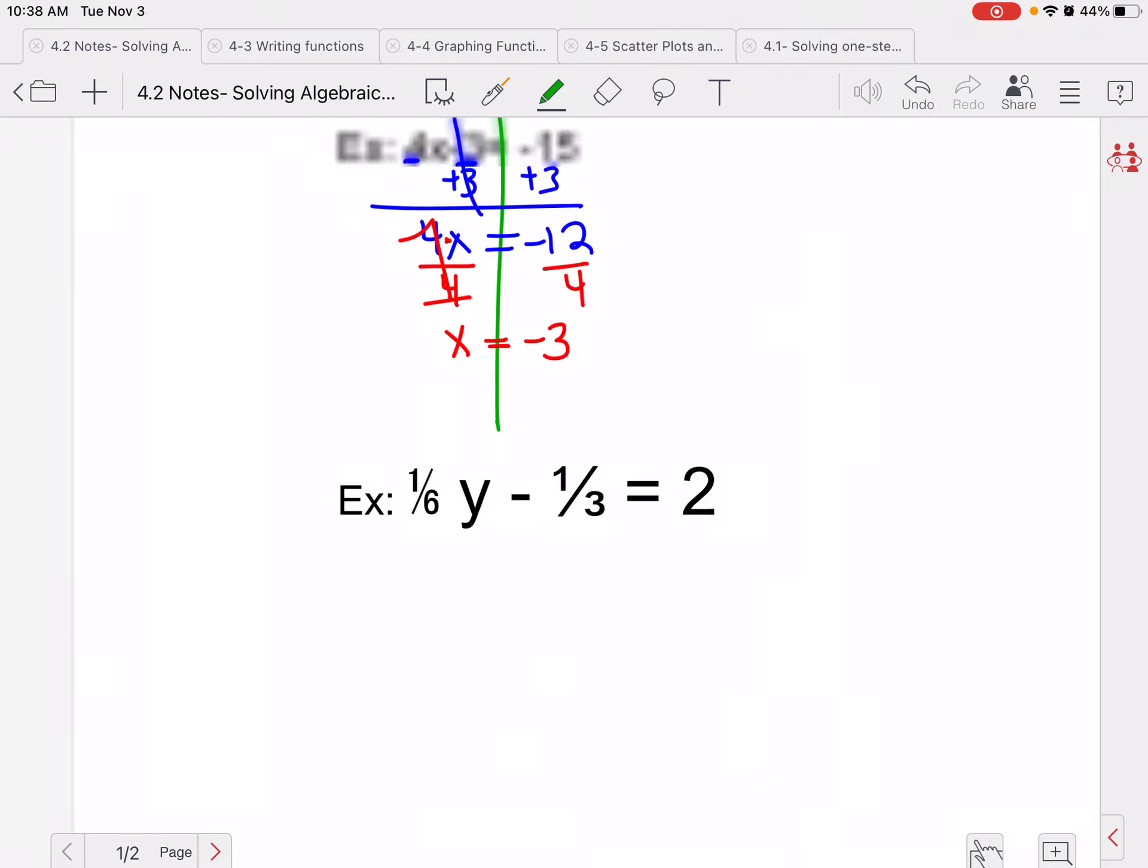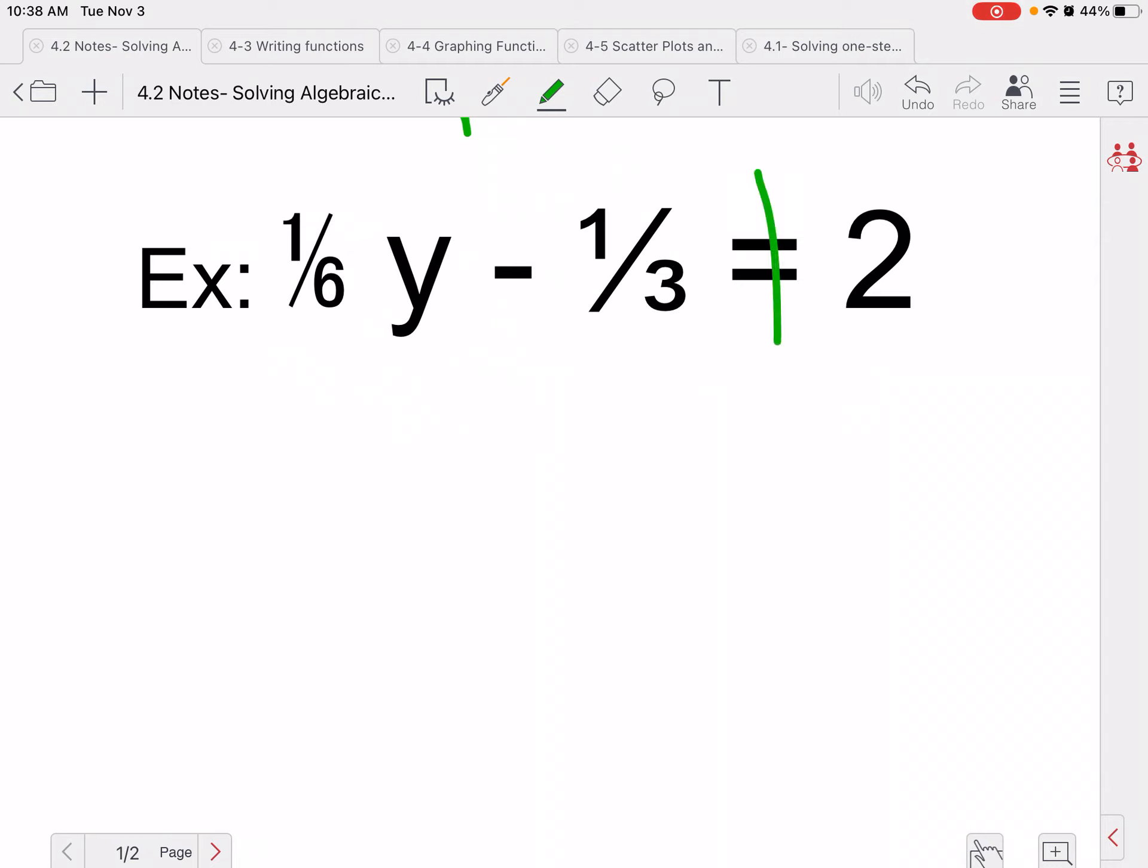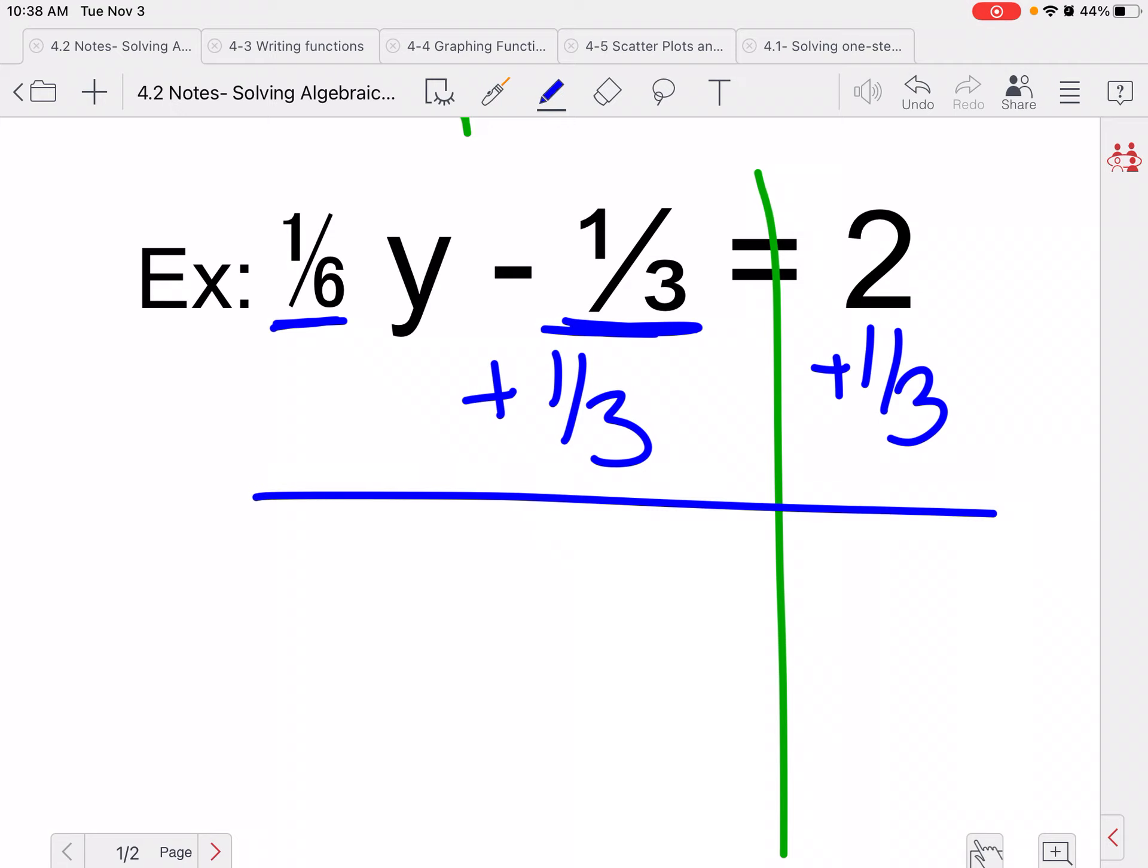Let's try a fraction one, which I'm sure you're all super thrilled about. I'm drawing my line to show what I do to one side and do the other. I'm noticing I have a 1/6, then I have a 1/3, and the 1/3 is subtracting from y, and the 1/6 is multiplying by y. So I'm going to get rid of my addition subtraction first by adding 1/3 to both sides. So I know that I have 1/6 y, because this cancels to be 0. Equals 2 plus 1/3, which is just 2 and 1/3.